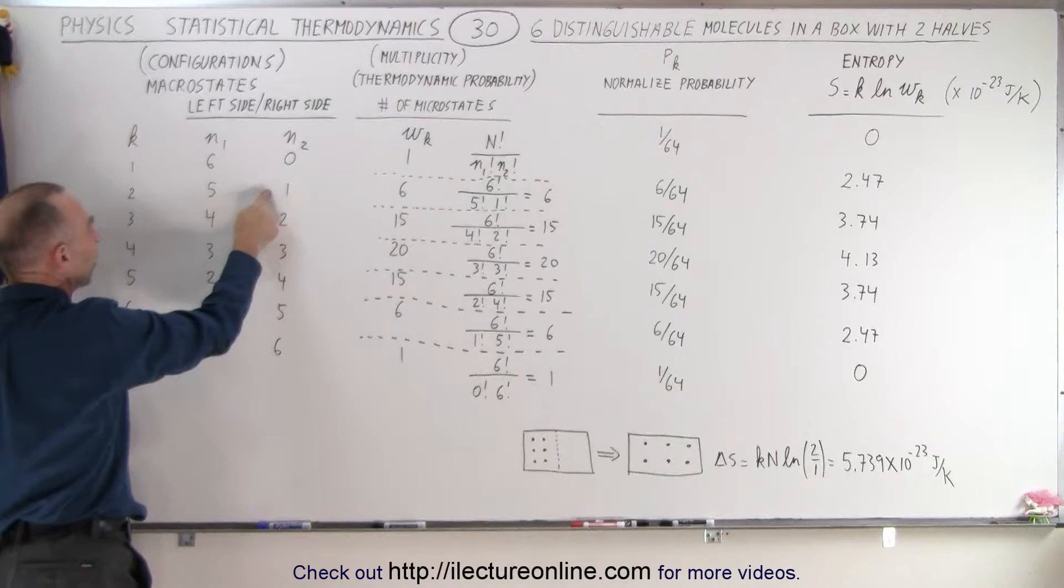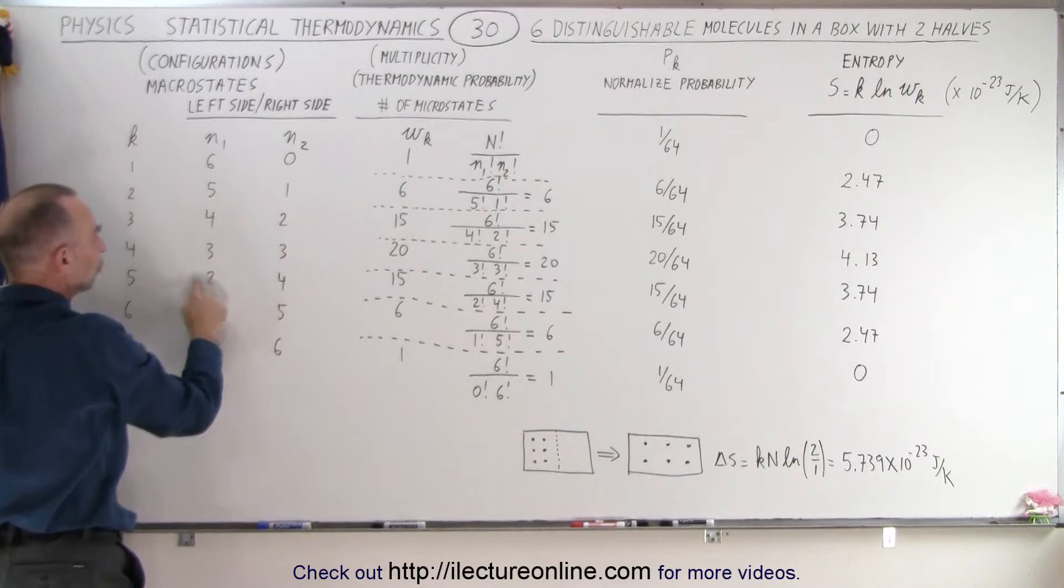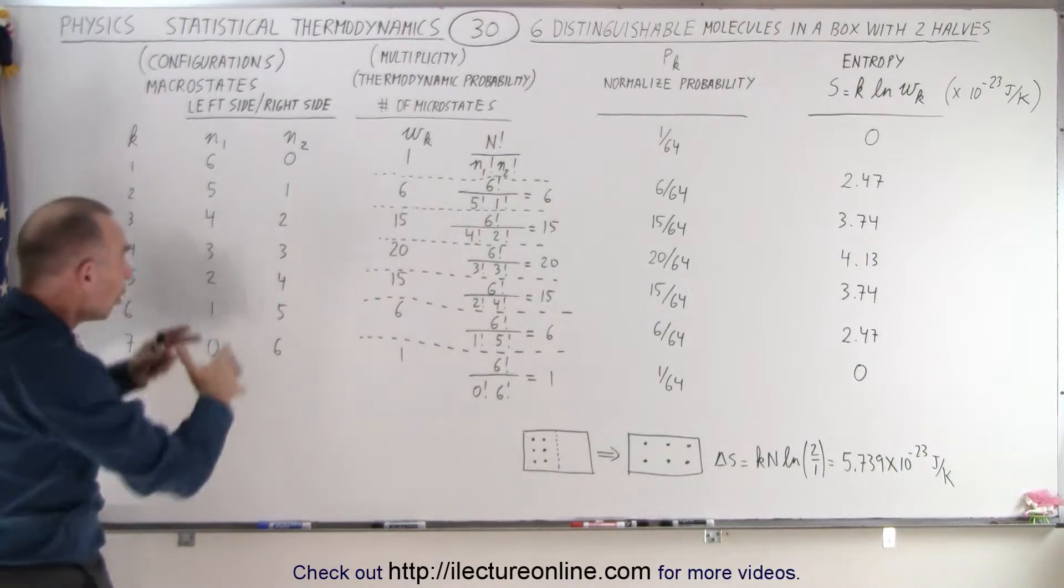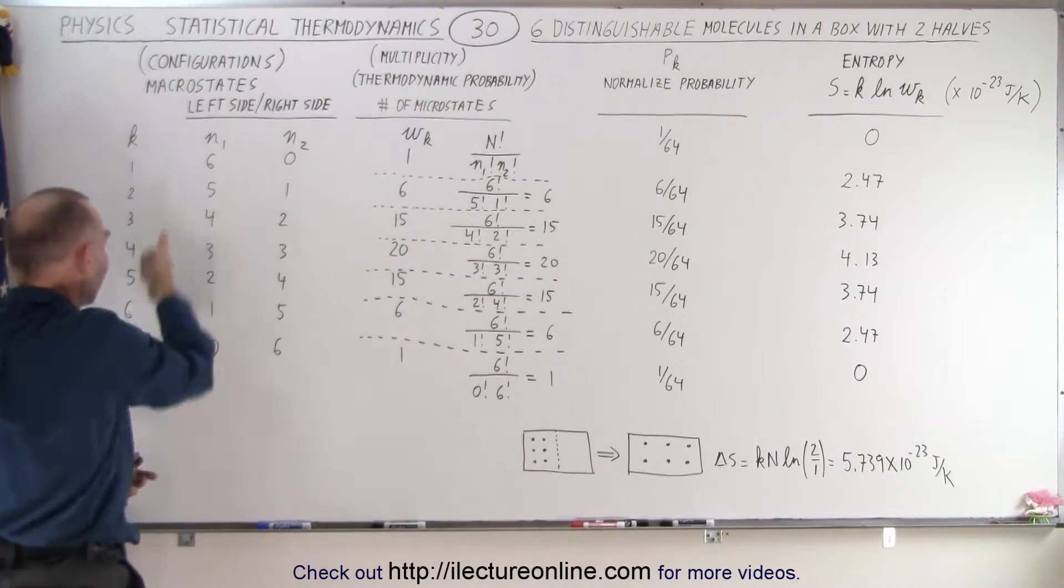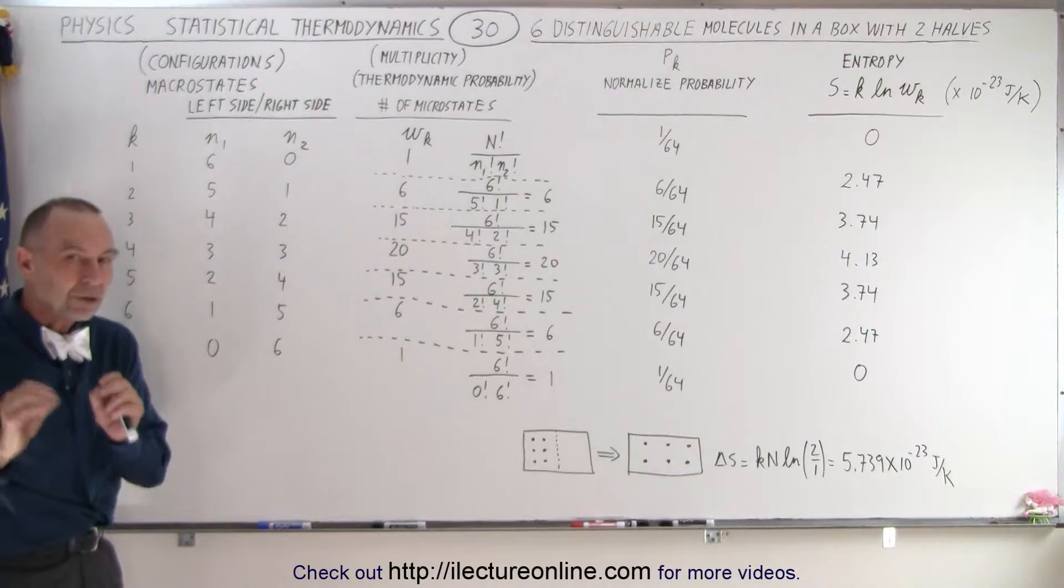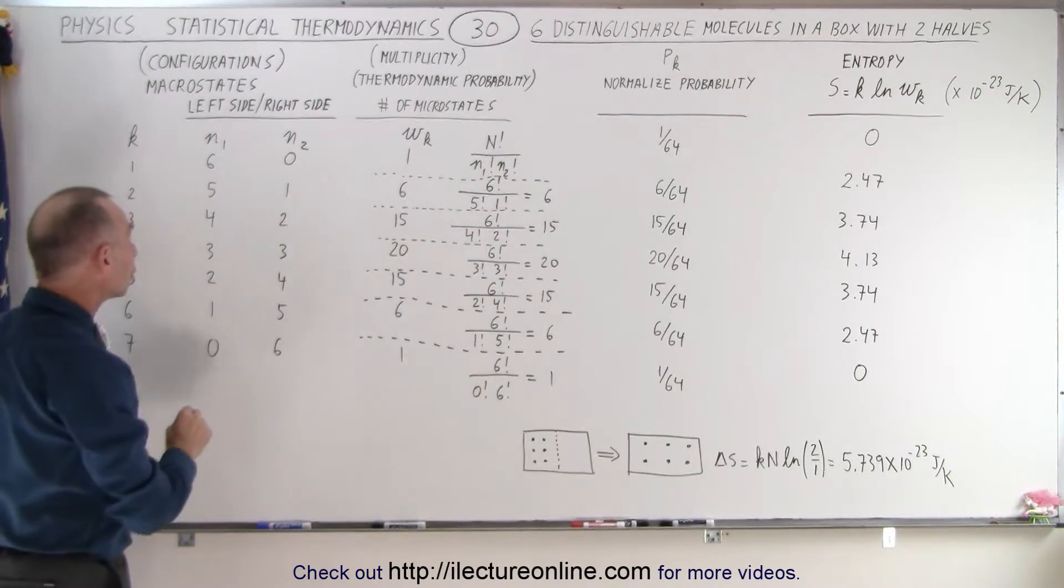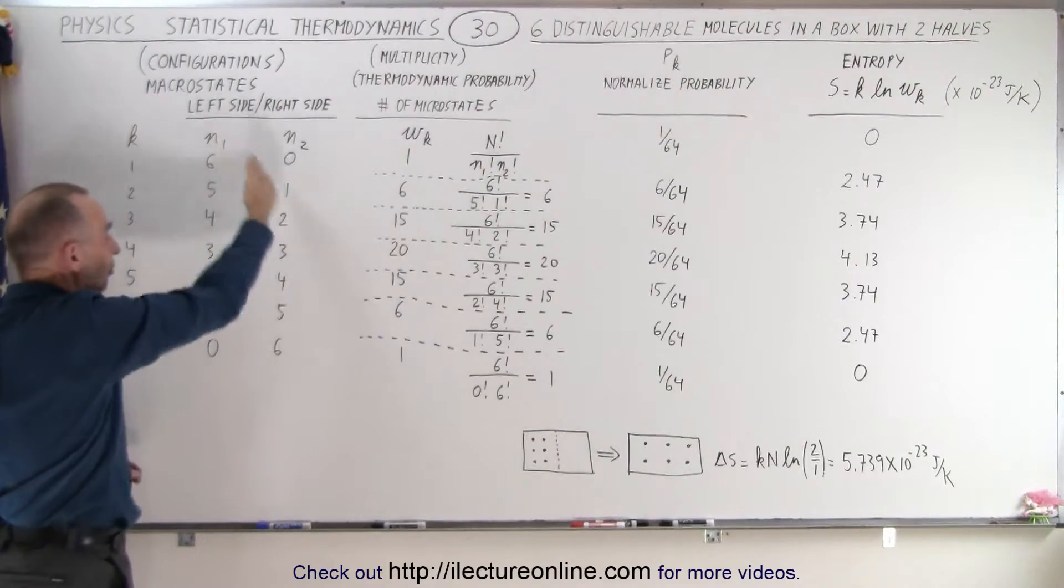So either it's 6-0, 5-1, 4-2, 3-3, 2-4, 1-5, and 0-6. So there are seven different configurations therefore there are seven different macrostates. In each of the macrostates there are certain number of ways in which we can arrange the molecules to correspond to this configuration.